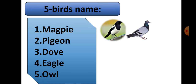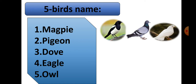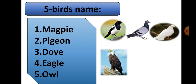Dove. Dove is a bird. Number four is Eagle — E, A, G, L, E. Eagle. Number five is Owl — O, W, L.